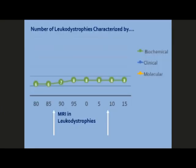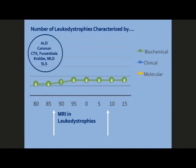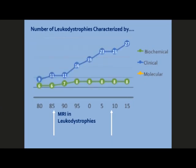When I first started working on the leukodystrophies, the number of disorders for which we had a specific diagnosis were few and far between, because primarily the disorders that could be diagnosed were diagnosed based on biochemical testing. These included ALD, Canavan's disease, CTX, fucosidosis, Krabbe, MLD, and Sjögren-Larsen syndrome. It's really not until the late 1990s, thanks in large part to MRI pattern recognition, that the number of specific diagnoses that could be characterized increased dramatically.